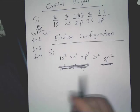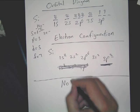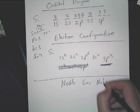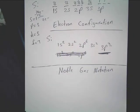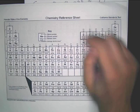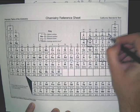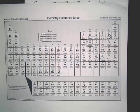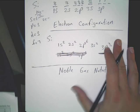Now the final thing is called noble gas notation. Looking at silicon, what is the noble gas that is above it on the table? You go up and over, and you see what you run into — you run into neon. So that's what we use.